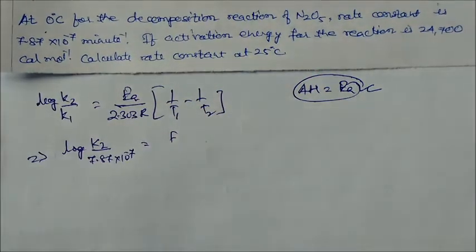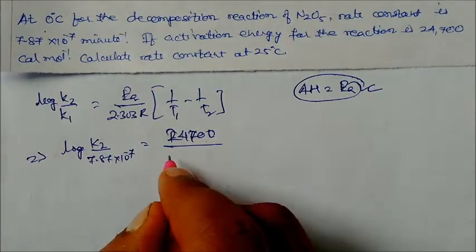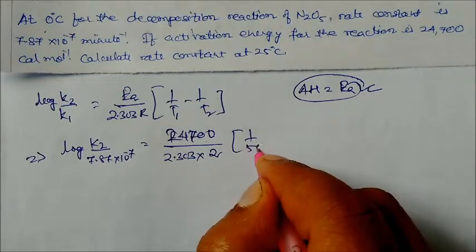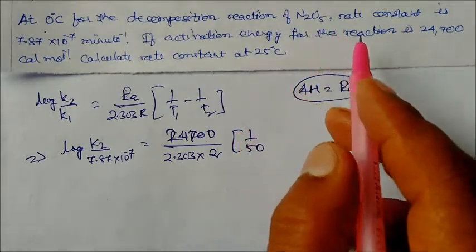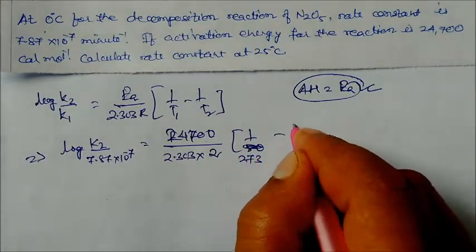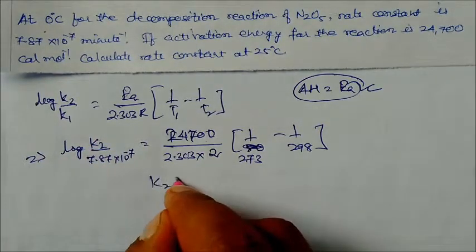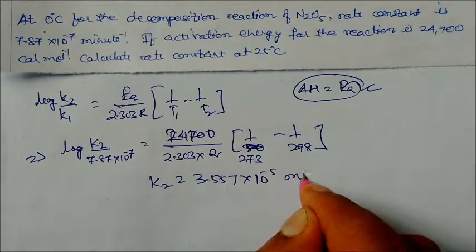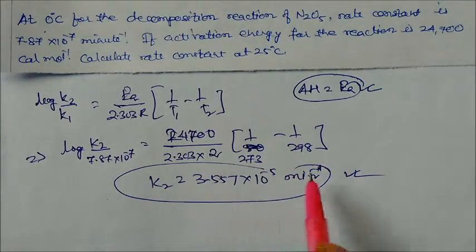Substituting k1 = 7.87×10⁻⁷/min, Ea = 24700 cal/mol, R = 2 cal/mol·K, T1 = 273 K (0°C), T2 = 298 K (25°C): log(k2 / 7.87×10⁻⁷) = 24700 / (2.303 × 2) × (1/273 − 1/298). Solving gives k2 = 3.557×10⁻⁵ per minute. This is the rate constant value.